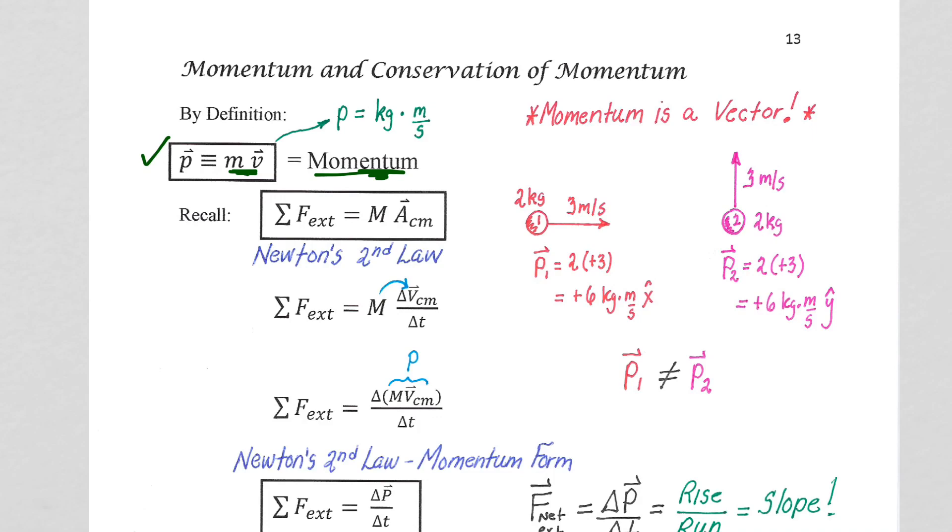It's the mass times the velocity of the object. So you can have a large momentum for one of two reasons. Either you have a really large mass, like the Earth, which has an extremely large mass. As it turns out, later in the course, we're going to see the Earth also has an extremely large speed as it zooms around the Sun. So the Earth carries an enormous amount of momentum.